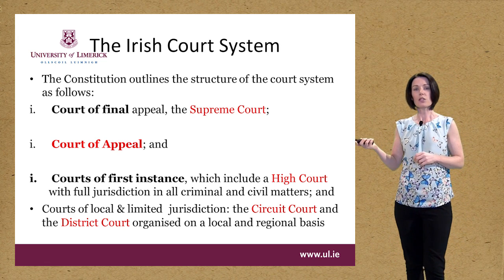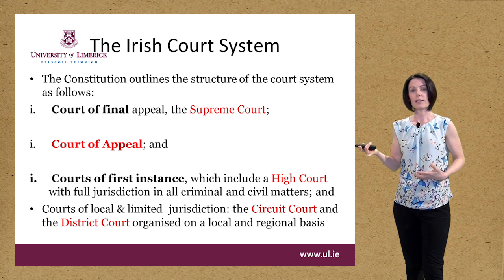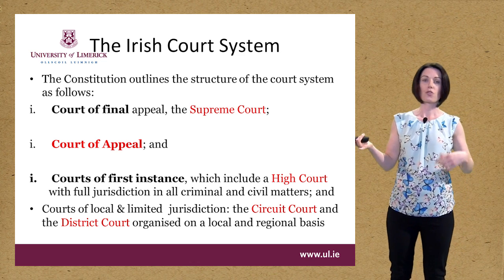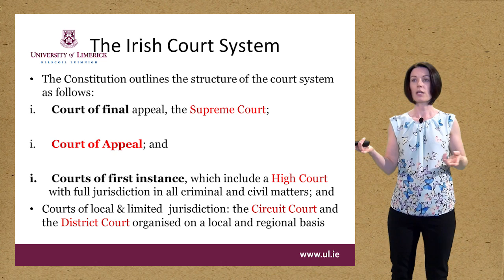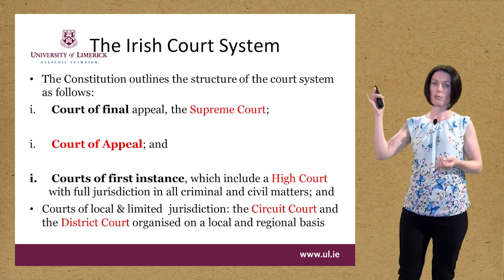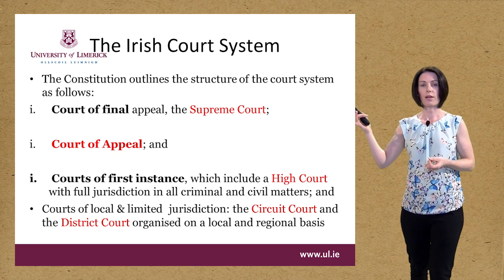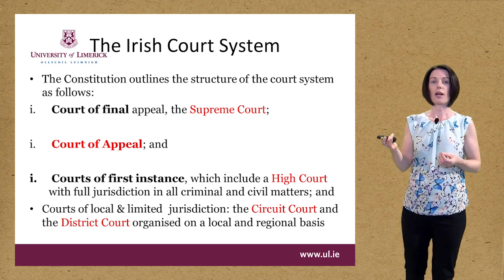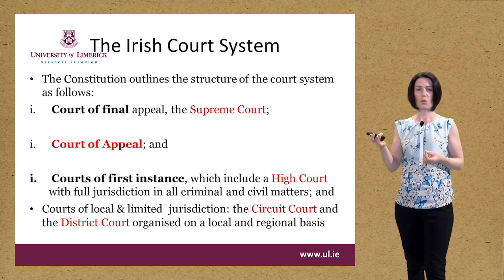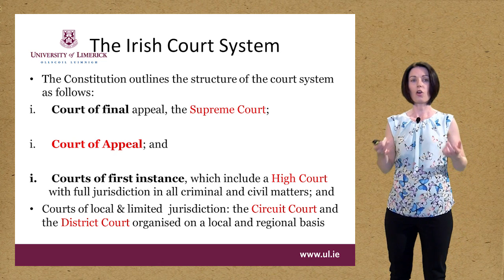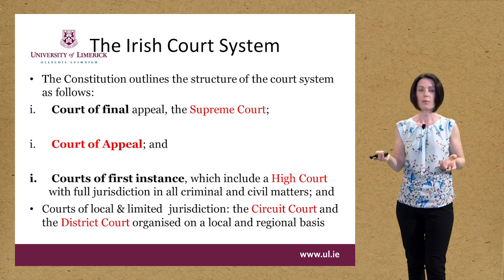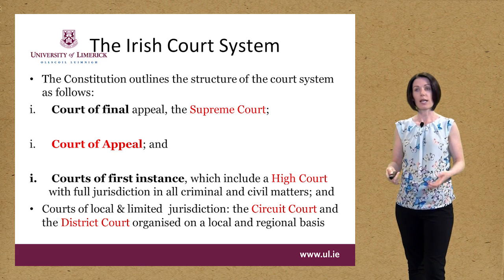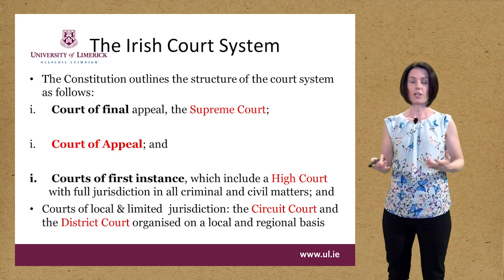The Constitution sets out the structure: we have a court of final appeal known as the Supreme Court. Through a recent amendment, we now have a Court of Appeal that sits between the Supreme Court and the High Court. Then we have a court of first instance — the High Court — which has full and original jurisdiction in all civil and criminal matters. And then we have courts of local and limited jurisdiction: the Circuit Court and the District Court, organised on a local and regional basis.